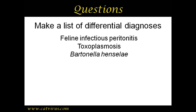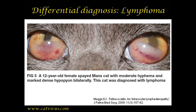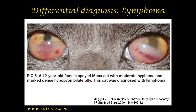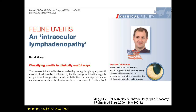Continuing with our list: Bartonella henselae and other Bartonella species. Bartonella henselae is the cat scratch disease organism and has been associated with uveitis both in cats and human beings. Neoplasia can present similarly to FIP — here is a photo of the eyes of a cat with lymphoma taken from David Knight's excellent review of uveitis published in JFIMS.